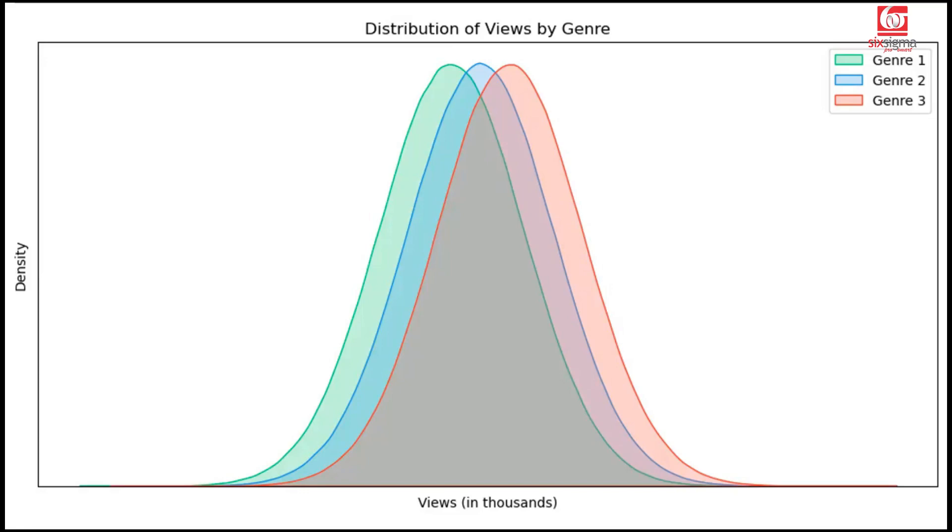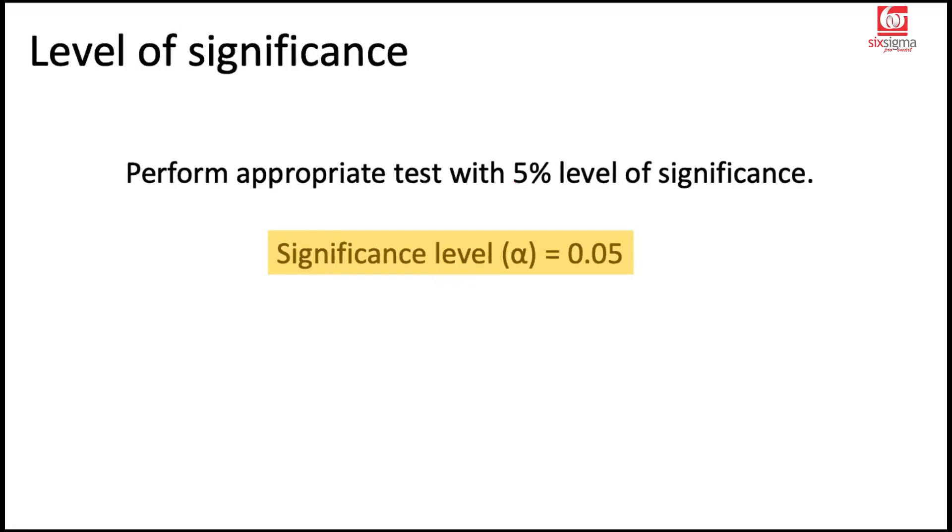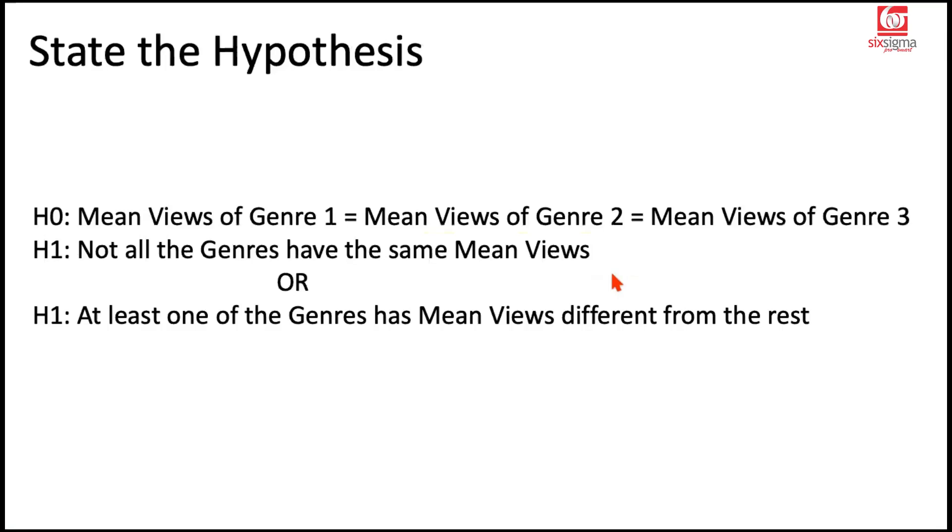The groups are pretty close when it comes to their means. The distributions are nearly overlapping. And if you see the shapes of these bells, they seem to be a little spread apart from the means. We can say high variation, but the groups are fairly comparable when it comes to their means. With this understanding, we'll now move back to our problem statement and try solving it. Let's understand what all information has been provided to us. We've been provided the level of significance, which is 5% or alpha is 0.05. Let's understand how the null and alternate hypothesis statements are written for ANOVA. The null hypothesis would be that the mean views of genre 1 is same as the mean views of genre 2, which in turn is same as the mean views of genre 3. They are comparable. On the other hand, the alternate hypothesis can be written in two different ways, which essentially leads to the same interpretation. First way would be to state that not all genres have the same mean views, which means at least there is some difference in one of the genres. That's exactly what the other way writes: at least one of the genres has mean views different from the rest. Maybe all three are different, or maybe at least one is different from the rest. That's how we state the hypothesis.